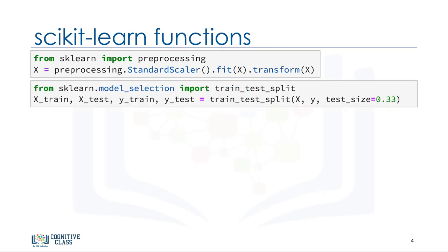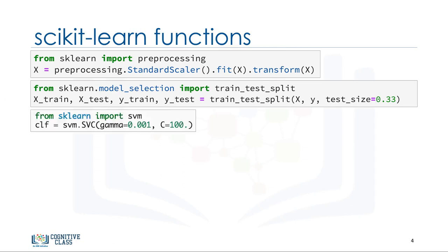You have to split your dataset into train and test sets to train your model, and then test the model's accuracy separately. Scikit-learn can split arrays or matrices into random train and test subsets for you, in one line of code.